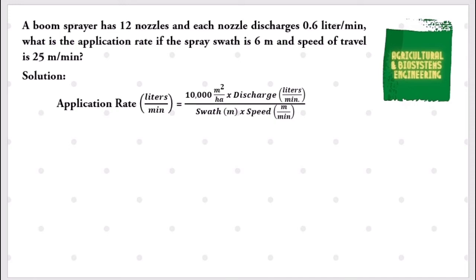Before we solve for the application rate, we have to first solve for the total discharge. Because in the problem it indicates 12 number of nozzles. If in case there is no number of nozzle indicated in the problem, just simply use the discharge rate.